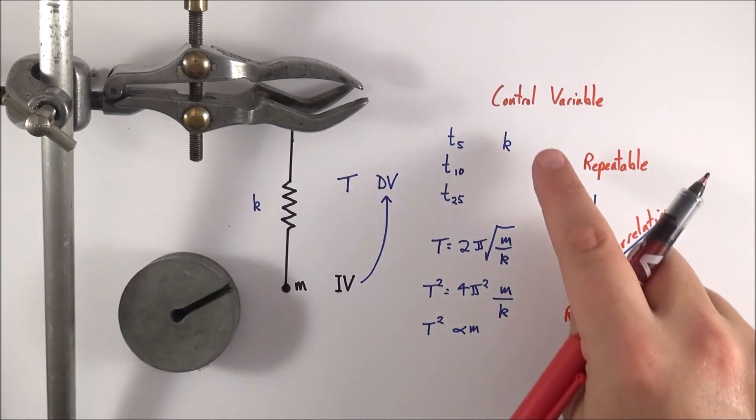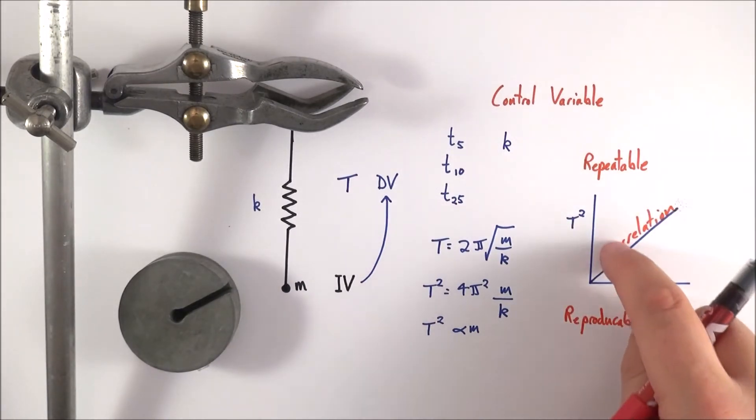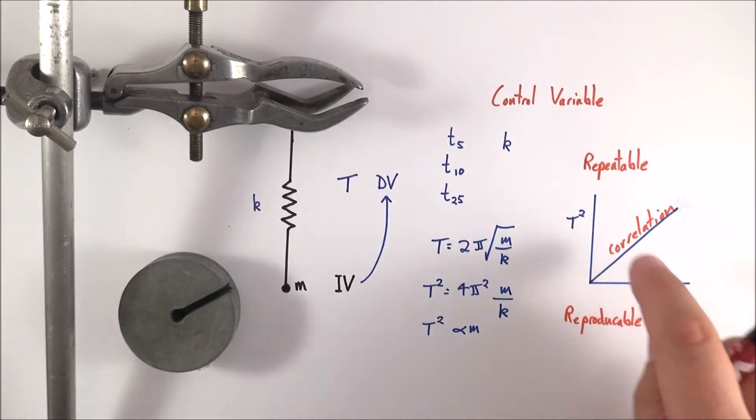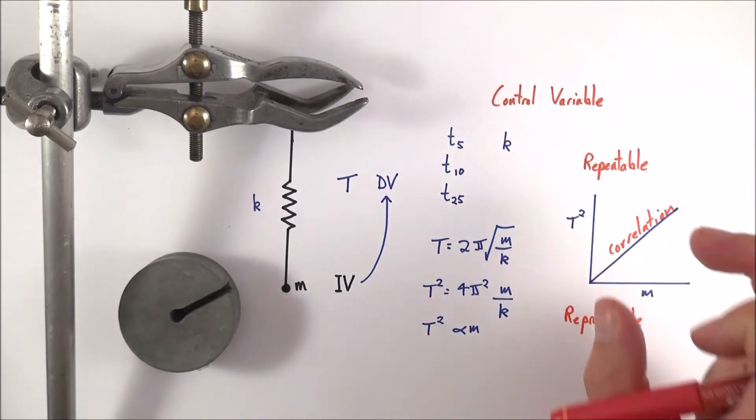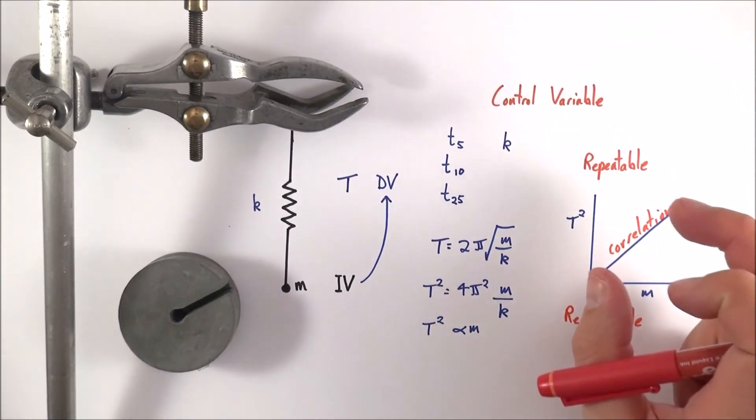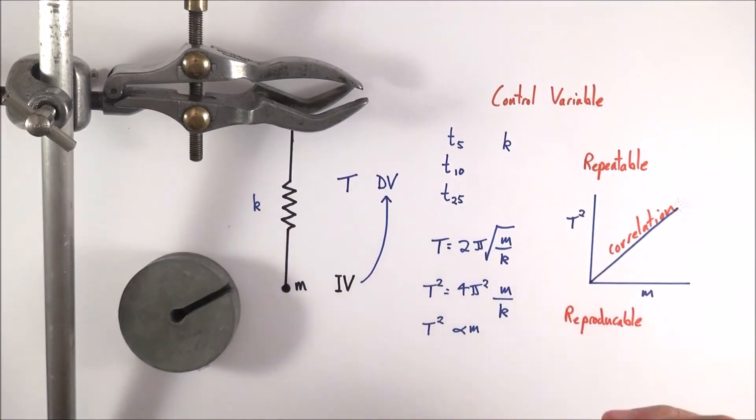Now by looking after these control variables, we should see a bigger correlation between maybe your independent variable and your dependent variable. But just be aware that just because there's a correlation between two bits of data doesn't mean there's causation.